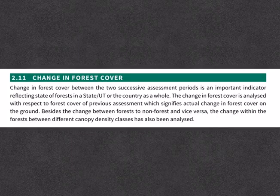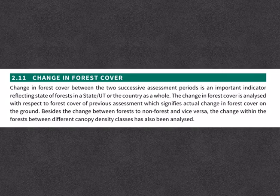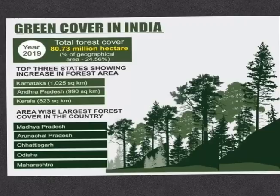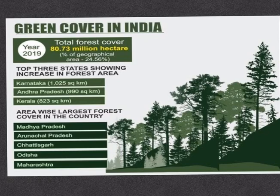The change in forest cover is analyzed between the two successive assessment periods — 2017 and 2019. As per the report, India's forest cover has gone up by nearly 3% in the last decade, increasing by 3,976 square kilometers. The top three states showing an increase in forest cover are Karnataka, Andhra Pradesh, and Kerala. However, the sharpest declines can be seen in the northeastern states of Arunachal Pradesh, Manipur, and Mizoram.